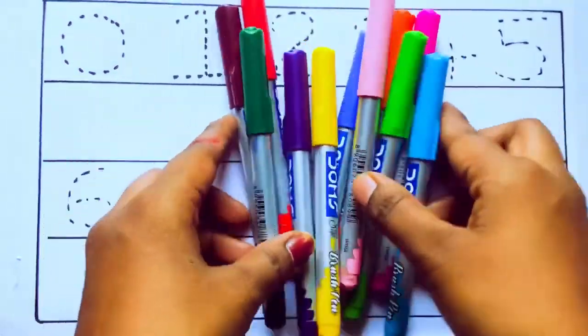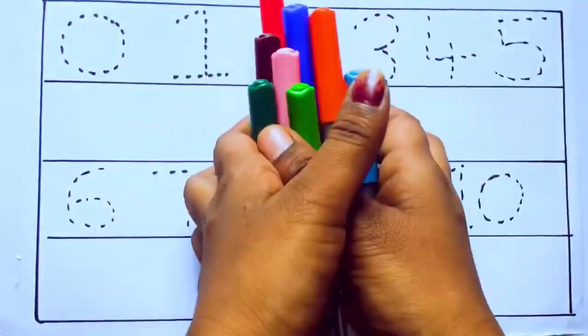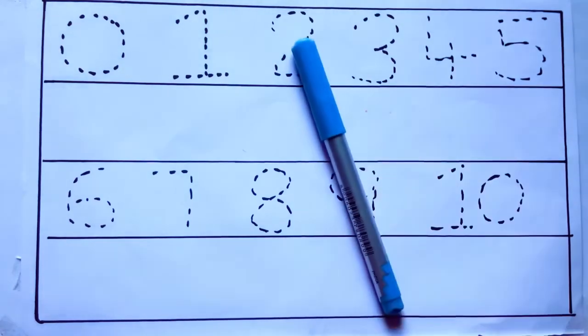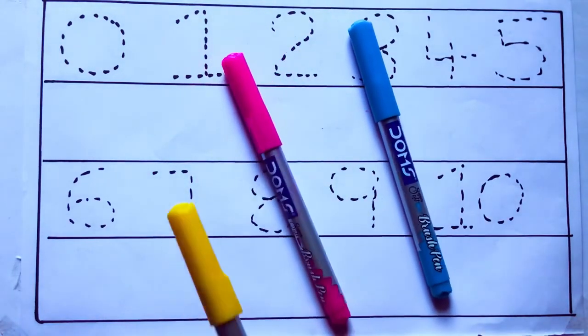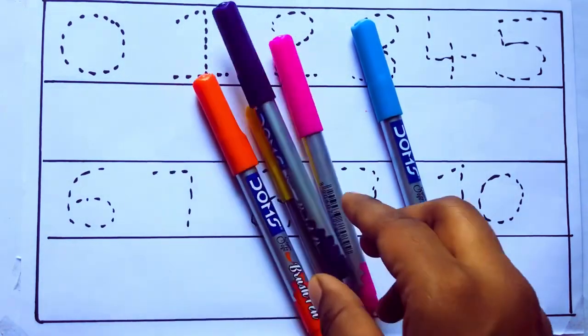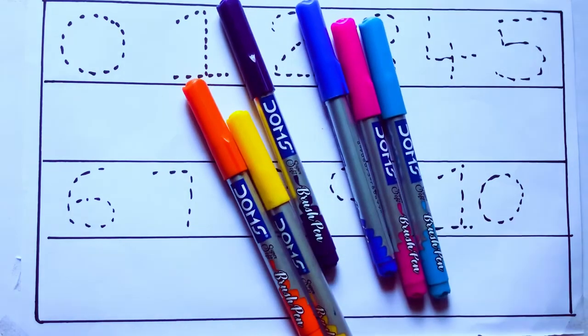Let's learn some colors. These are all the color pencils. Let's learn the names. Sky blue color, pink color, yellow color, orange color, violet color, blue color.